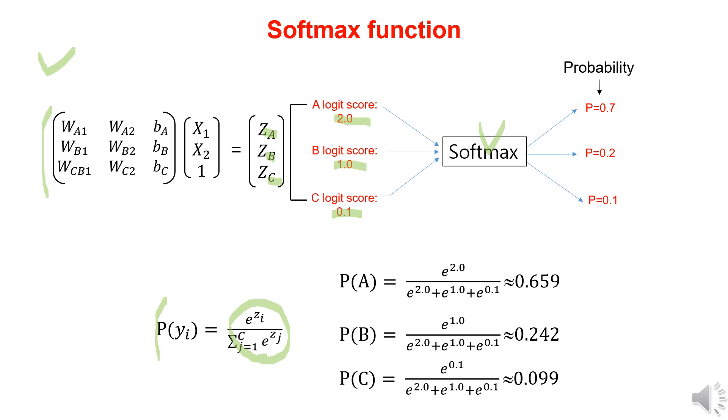So, the probability for class A is 0.659, for class B is 0.242, and for class C is 0.099. If we add the probabilities for all classes, we can see that the total is 1.